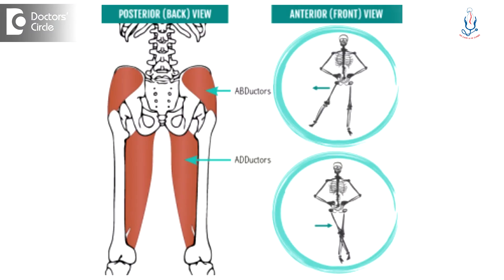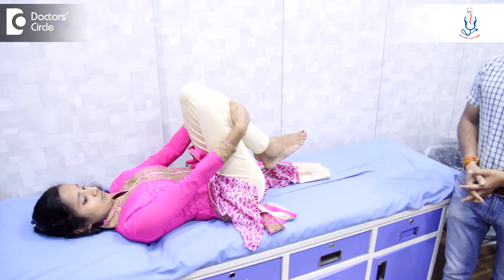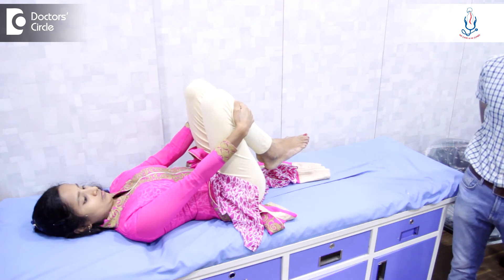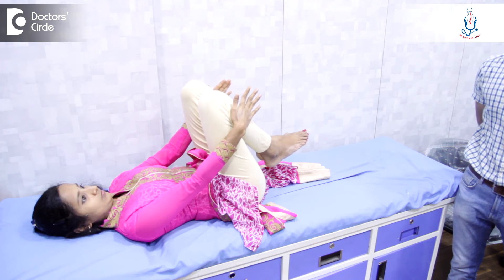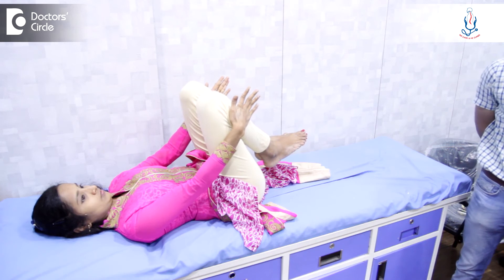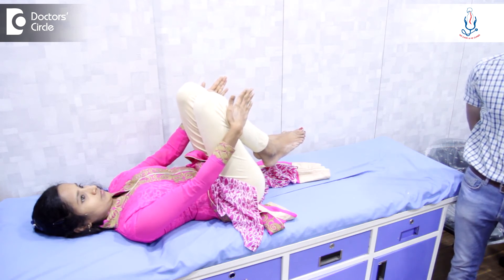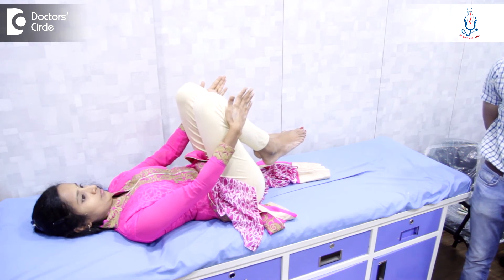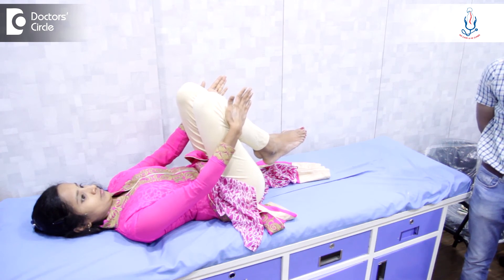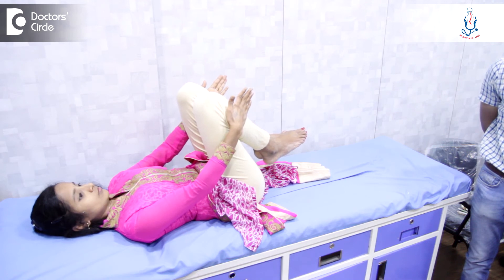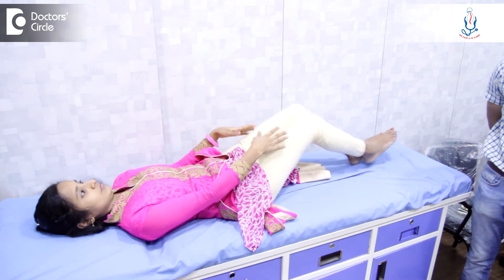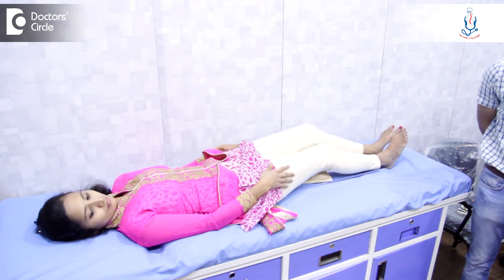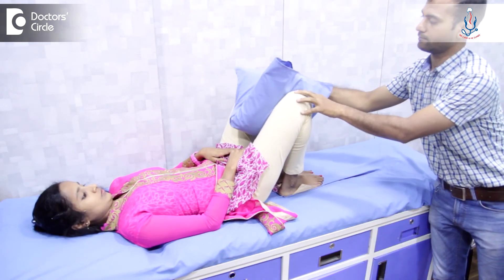Now we will demonstrate isometric exercises of the abductors and adductors of the hip. The patient holds the legs on each side and gradually abducts — that is, takes the legs away from the center — while pressing inward with both hands. We are doing abduction under the resistance of the hands. These are isometric exercises, meaning the muscle length does not change, only the tension inside varies.